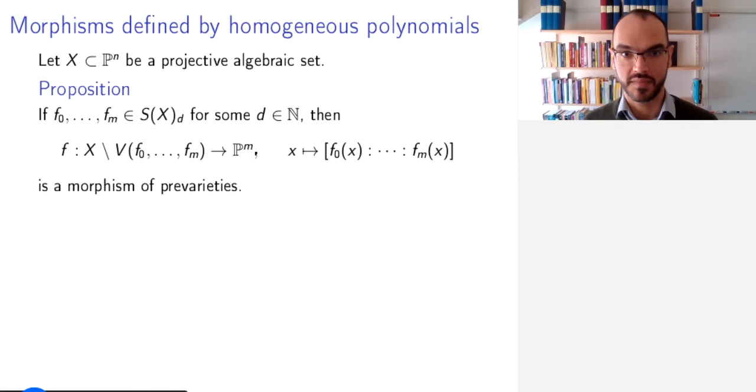Note that ℙᵐ, the m here is the number of polynomials plus 1, it might be different from n. And the way you get the map is that you map x to f₀(x) up until fₘ(x).